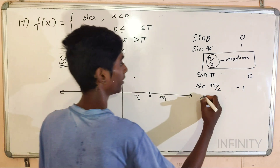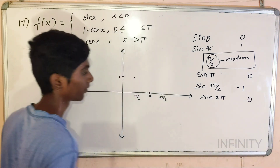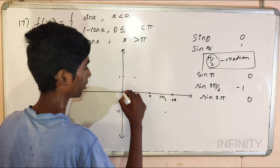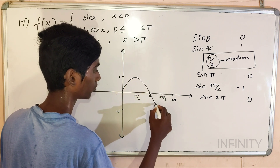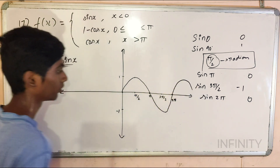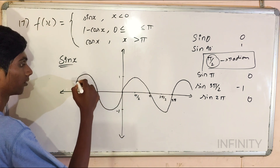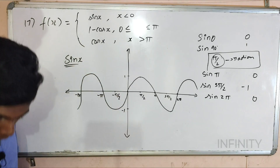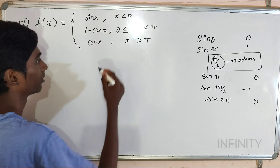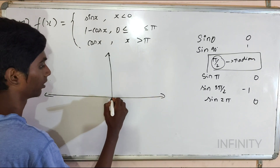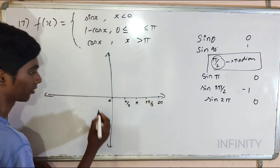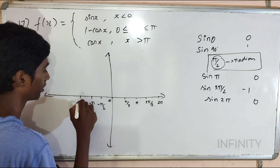This is minus 1. Sin 2 pi is equal to 0. So, 2 pi is again 0, so the graph is again completing the cycle. On the negative side, the same concept applies: minus pi, minus 2 pi, minus pi by 2. So that's the sin x graph. The x-axis has values: 0, pi by 2, pi, 3 pi by 2, 2 pi, minus pi by 2, minus pi, minus 3 pi by 2, minus 2 pi.